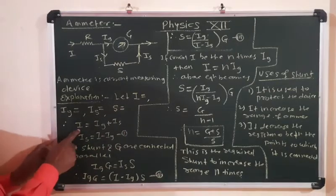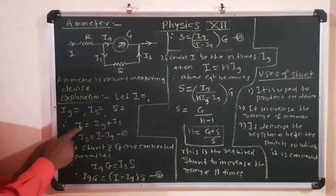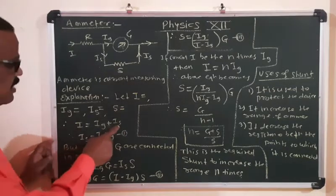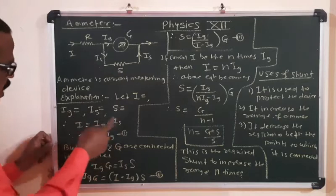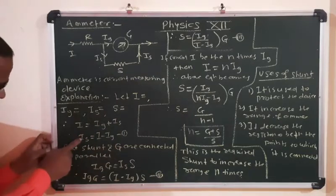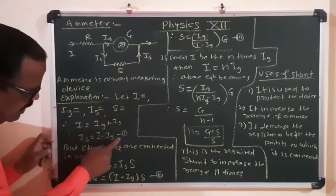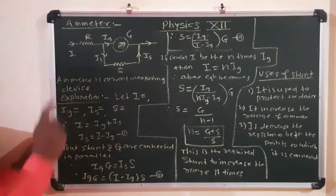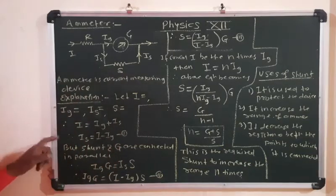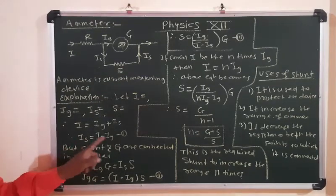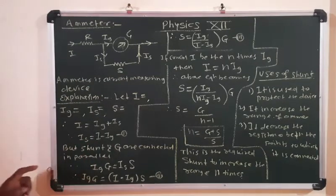Let I be the total current flowing through the circuit, Ig be the current flowing through the galvanometer, and Is be the current flowing through the shunt resistance. S is the shunt, which is a very low resistance connected in parallel to the galvanometer coil. Therefore, total current I = Ig + Is, so Is = I − Ig (equation 1).